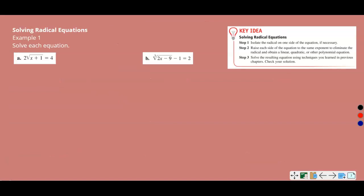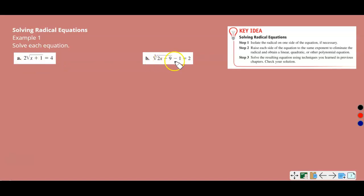Example 1: Solving Radical Equations. Let's look at the key idea. First thing you need to do is isolate the radical on one side of the equation. Part A has 2 times the square root, so you need to divide both sides by 2 to isolate the radical first. Part B has a cube root expression with minus 1 outside, so you need to add 1 to both sides to isolate that cube root first.